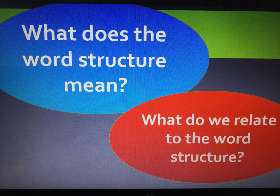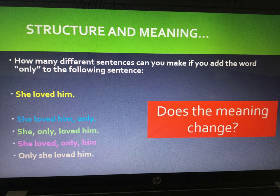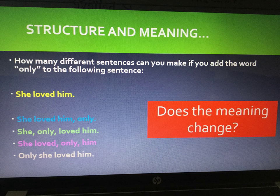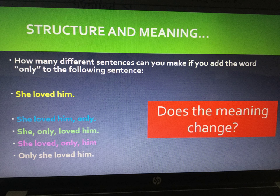Here's the first thing to look at. I've given you the sentence 'she loved him' and asked you to add the word 'only' in different places to see what happens. So: 'She loved him only.' 'She only loved him.' 'She loved only him.' 'Only she loved him.' Just read those back — there is a slight change in meaning each time. This is a quick way to show you how structuring sentences can impact meaning, and punctuation can be very important.